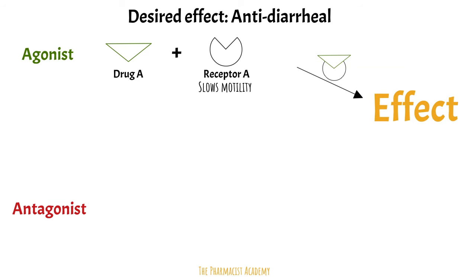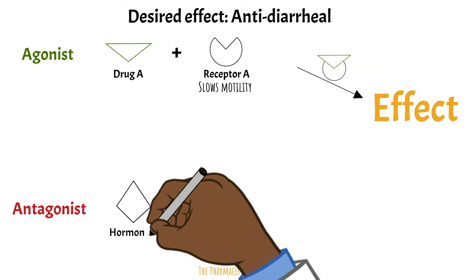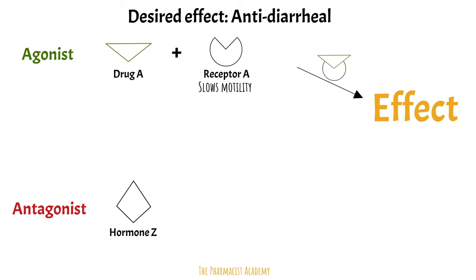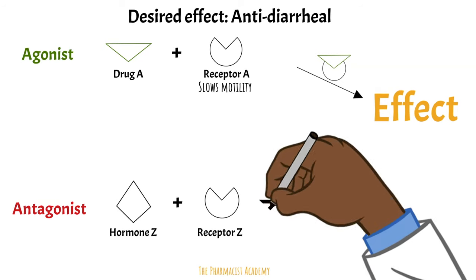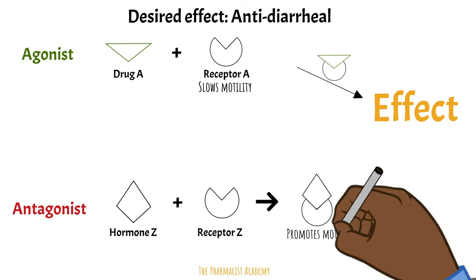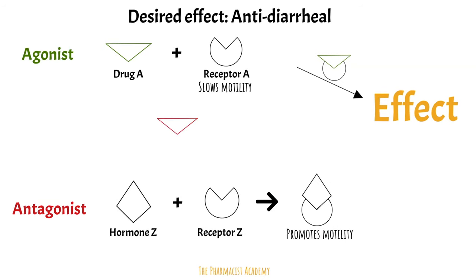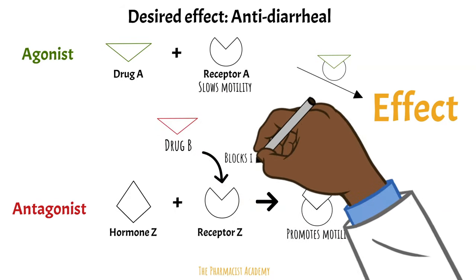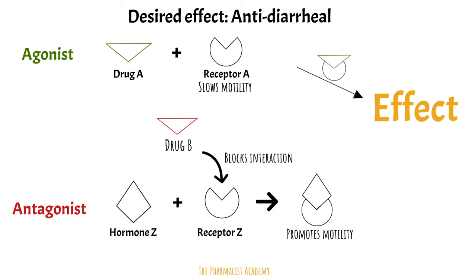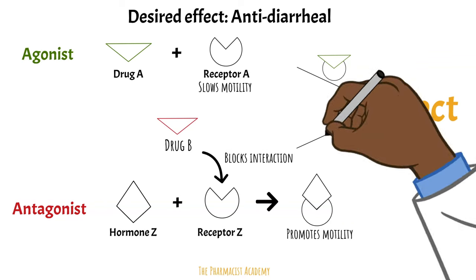We can also achieve the same effect with an antagonist. In this case, we have hormone Z. In normal circumstances, when hormone Z interacts with receptor Z, it forms a complex and this leads to increased GI motility. Since Drug B is an antagonist, it will bind to receptor Z, block the active site, and prevent hormone Z from interacting with receptor Z. Now, instead of promoting motility, the GI tract will slow down to help with the diarrhea.